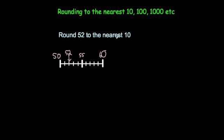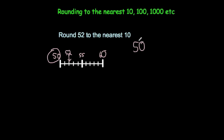So we're going to think to the nearest 10. Looking at it, 52 is much closer to 50 than it is to 60. Therefore 50 would be the answer. So if you were asked to round 52 to the nearest 10, the answer would be 50, because that's the closest 10.